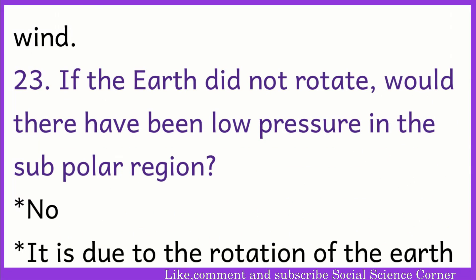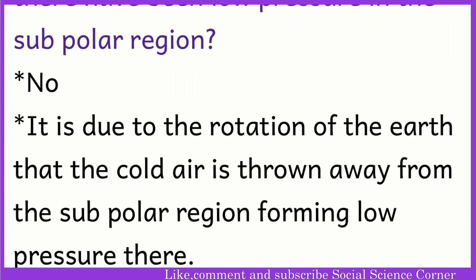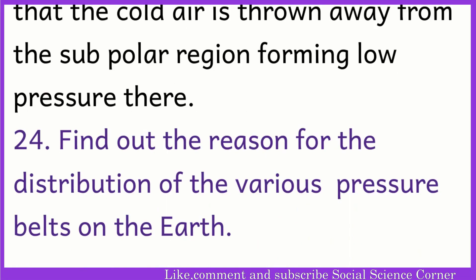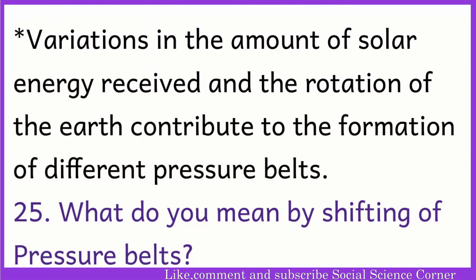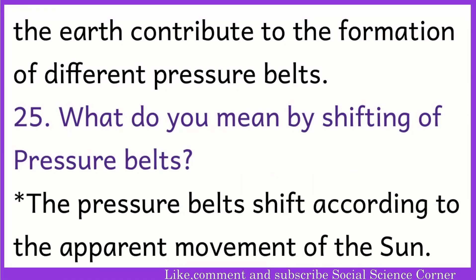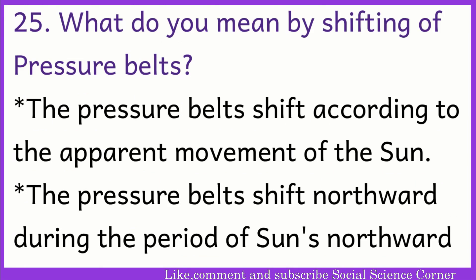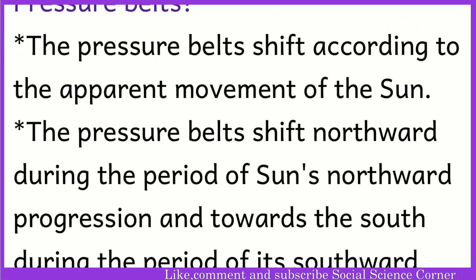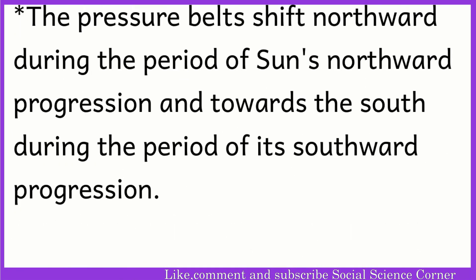If the earth did not rotate, would there have been low pressure in the subpolar region? No. It is due to the rotation of the earth that the cold air is thrown away from the subpolar region, forming low pressure there. Variations in the amount of solar energy received and the rotation of the earth contribute to the formation of different pressure belts. The pressure belts shift according to the apparent movement of the sun — northward during the sun's northward progression and towards the south during its southward progression.